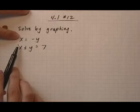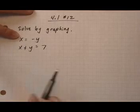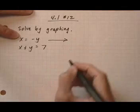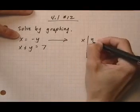So first we have x equals minus y, and then x plus y equals 7. And, as usual, we're going to find points to graph for each one of these.